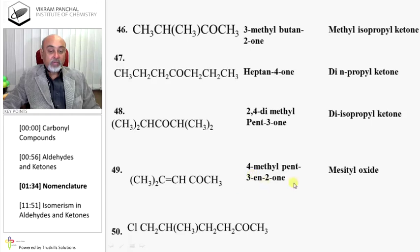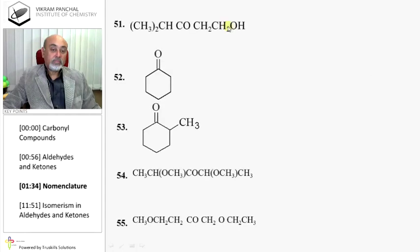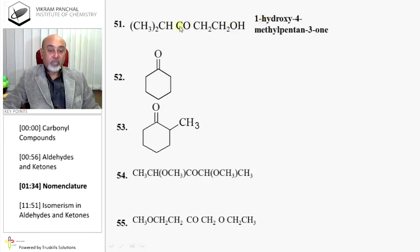4-Methylpent-3-en-2-one, or mesityl oxide. 6-Chloro-5-methylhexane-2-one. The OH group is on the first carbon, so it is 1-hydroxy-4-methylpentan-3-one.